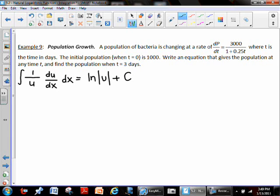What we've got is a population growth question. A population of bacteria changes at a rate of dP/dt equaling 3000 divided by 1 plus 0.25t, where t is the amount of days. The initial population at time zero is 1000. We want to write an equation that gives the population at any time t, and then find a specific population when time is 3.